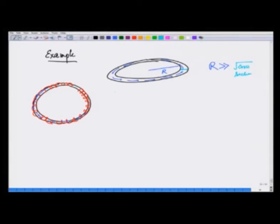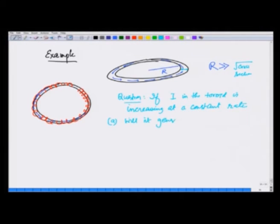So what I have is this ring in which there is field inside shown by blue. Let us take the radius of this to be much greater than the thickness of here, or the cross section is much greater than square root of cross section, so that it is like kind of thin tube making a ring. If I change the current in this, the question being asked is: if the B in the toroid is increasing at a constant rate, a) will it generate an electric field, and b) if yes, find its value on the axis of the toroid.